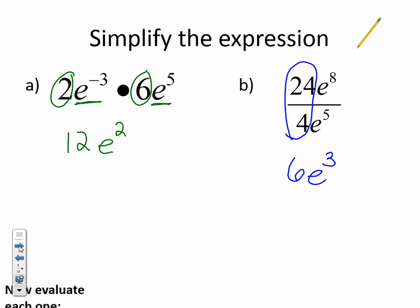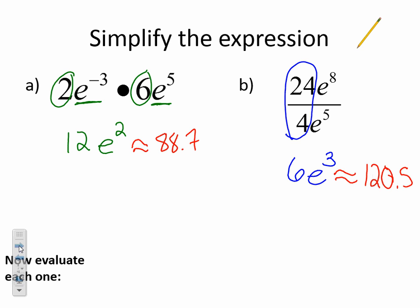If I wanted to evaluate each one, I could type this in my calculator. It's very important, you guys, that you know where the E button is on your calculator, because we're going to be using that a lot. For this first one, I would just type in 12 times E to the second power, and I'm going to get approximately 88.7. You can do the same thing here. I can take 6 times E to the third, and I'm going to get approximately 120.5. You need to know where your E button is on your calculator.